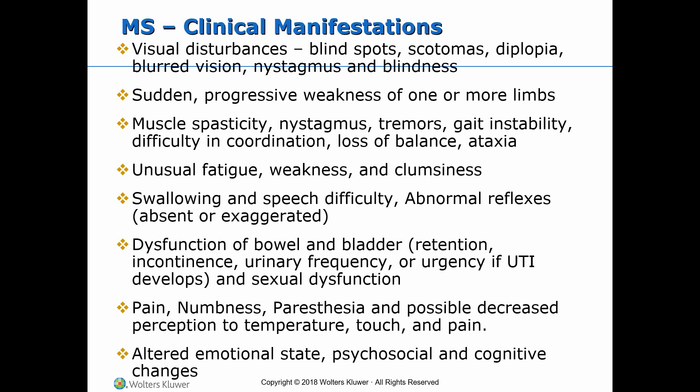Muscle spasticity is seen in 90% of cases. Tremors, gait instability, difficulty in coordination, loss of balance, and ataxia may be seen. Unusual fatigue, weakness, and clumsiness are also noted. Fatigue affects most people with multiple sclerosis and is most often the most disabling symptom.